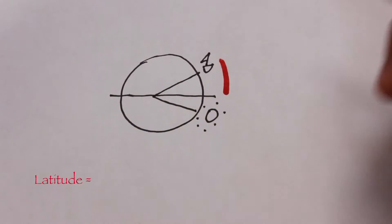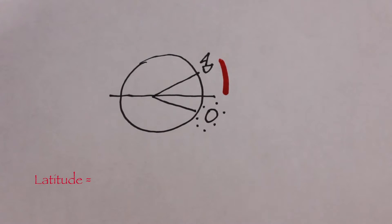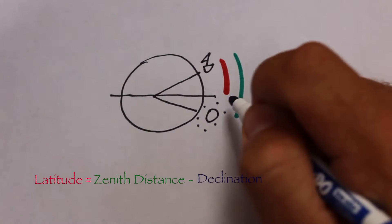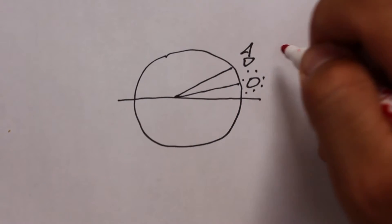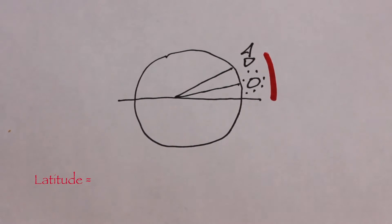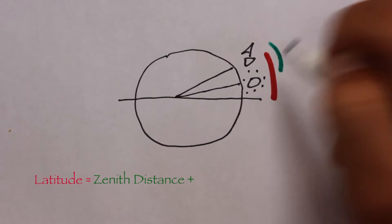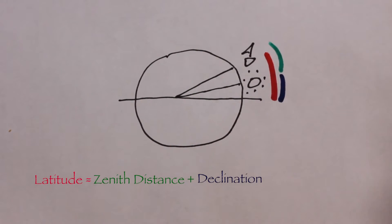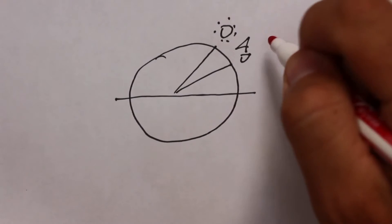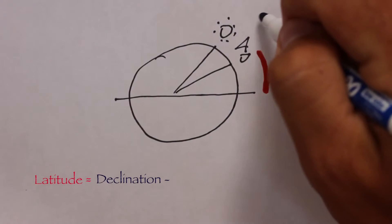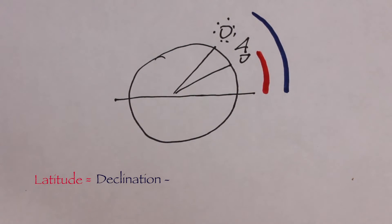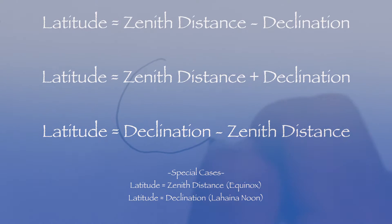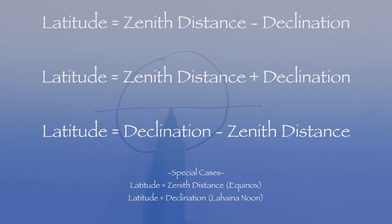In the first case, latitude equals zenith distance minus declination. In the second case, latitude equals zenith distance plus declination. In the final case, latitude equals declination minus zenith distance. To summarize: aside from the two special cases, there are only three real options for local apparent noon. If you make the drawing every time, you can't go wrong.